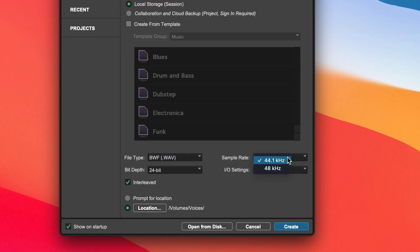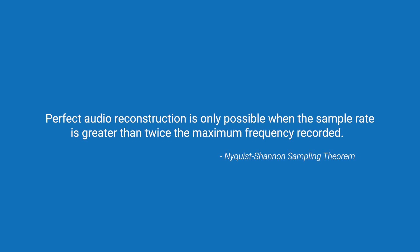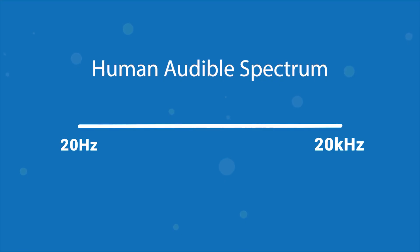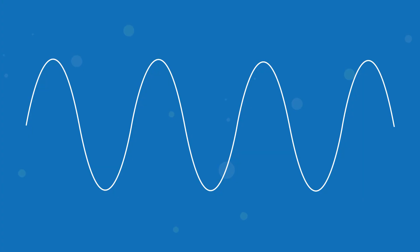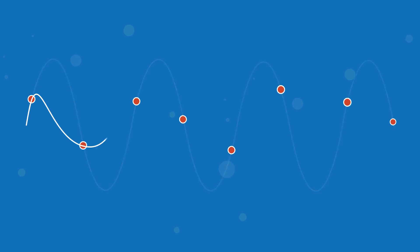You might have noticed that sample rates are always over 40 kHz — they start from 44.1 and work their way up from there. The reason is actually quite simple. The Nyquist principle states that perfect audio reconstruction is only possible when the sample rate is greater than twice the maximum frequency you're trying to record. For example, humans can hear up to around 20 kHz, so a sample rate of at least 40 kHz is necessary to avoid the aliasing effect in our high frequencies and to allow that theoretical perfect reconstruction. Any fewer samples and those higher frequencies would be sort of averaged, creating this aliasing effect in our high end.